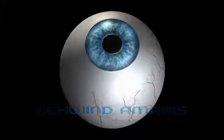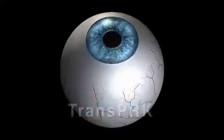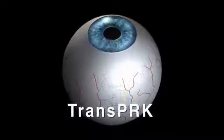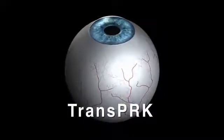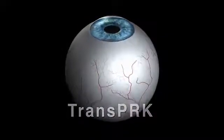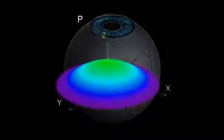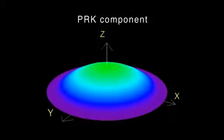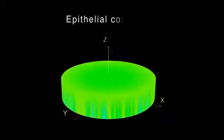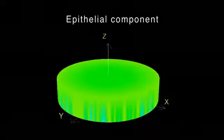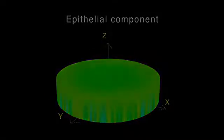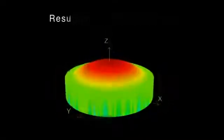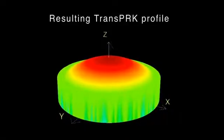The Schwind Amaris laser systems provide a sophisticated approach to carry out no-touch or laser surface ablations. TransPRK treats refractive errors by superimposing an aspheric ablation profile with a defined epithelial thickness profile based on literature values and mean epithelial profiles of large-based populations.